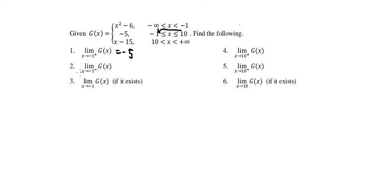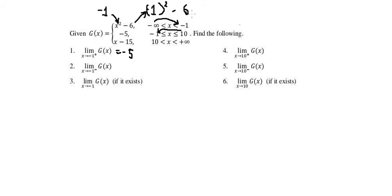Next, we have the limit as x approaches negative 1 from the negative side. From the negative side, we have x to the power of 2 minus 6. We input negative 1 here and we can get the result. That should be negative 1 squared minus 6. Negative 1 to the power of 2 is 1, and 1 minus 6 gives us negative 5. The answer here is negative 5.